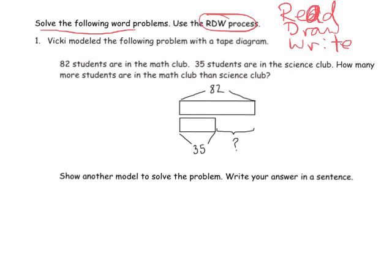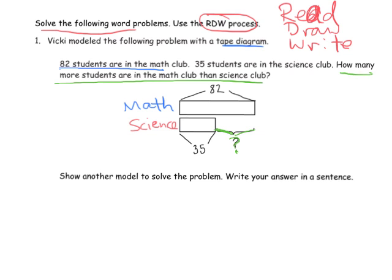We're going to begin with Vicky. She's modeling this problem using a tape diagram. We've got 82 students are in the math club, so we should write math here. And 35 students are in the science club, so we should put science here. She has properly modeled the numbers. The question is how many more students are in the math club than the science club. That's the whole point of this bracket right here with the question mark. This is showing us how much larger the math group is than the science group. This is a great model.